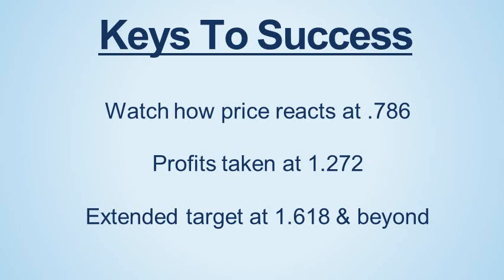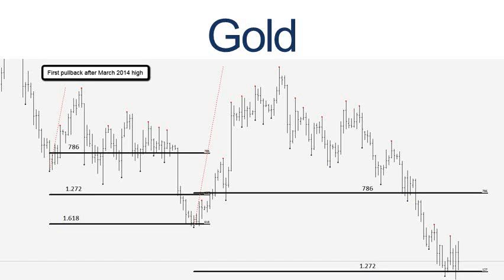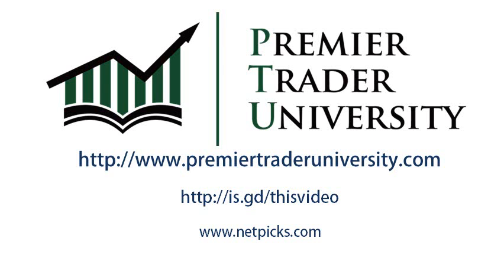I urge you to go back over your charts and see how this plays out in your chosen instrument. I'm going to leave you with a chart of gold and the first retracement after the March 2014 high. You're going to see that price has bottomed out after the second pullback series right at the 1.272 profit area. Good luck — let me know how the testing goes.